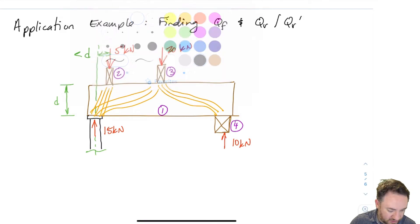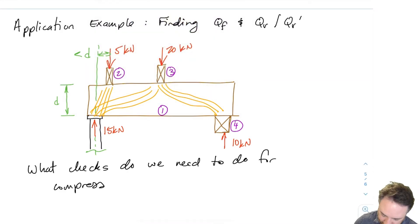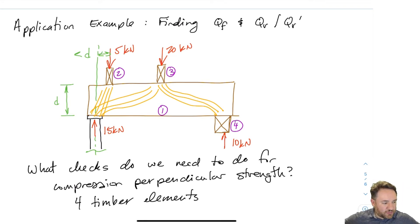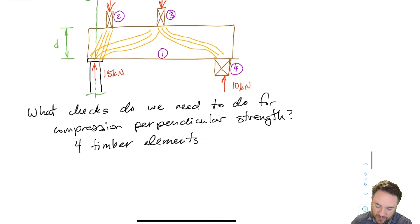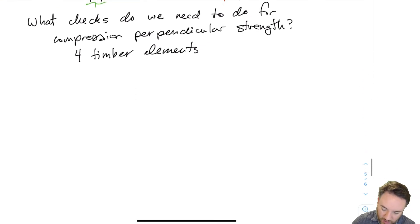So what checks do we have to do for compression perpendicular strength in this example? We have four different timber elements, and I've numbered them one, two, three, and four. And so what I'm going to do is I'm just going to list for each timber element, what checks do we have to do? So for one, which is the beam, this is the big beam that goes horizontally across all.